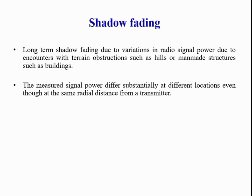Shadowing: long-term shadowing is due to the variation in radio signal power caused by encounters with terrain obstructions such as hills, or man-made structures such as buildings. The measured signal power differs substantially at different locations, even at the same radial distance from a transmitter. If you draw a circle of radius r from a single point, the signal power is not the same at each point on the circumference — fading differs at each point along that circumference.